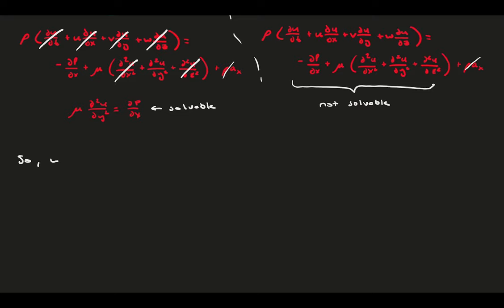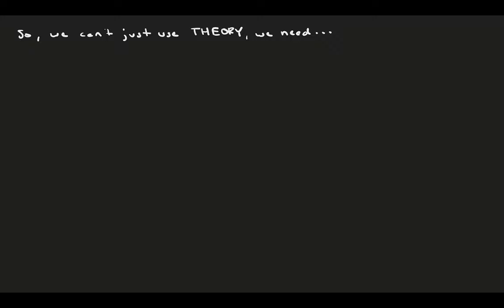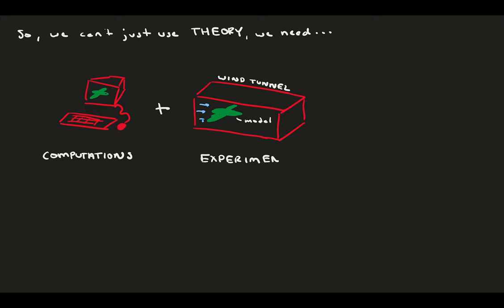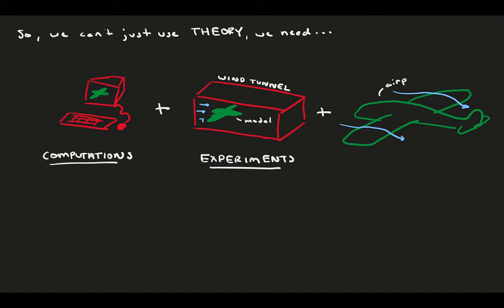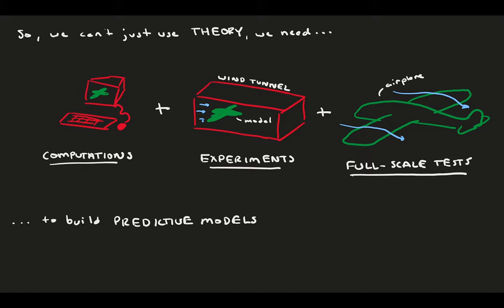So we cannot solve turbulence using only theoretical derivation. In practice, we use an elegant combination of computational fluid dynamics, where computers are used to estimate the flow field; experiments, where we test scaled-down models in idealized wind tunnels and water channels; and full-scale tests, where measurements are made directly. With this combination, we can usually learn what we need to know about turbulence behavior for a specific flow type and condition. However, if our flow situation changes, we constantly need to redo these tests to come up with new models for the new flow.